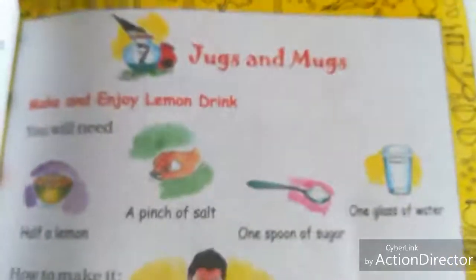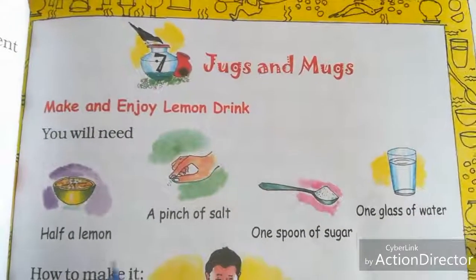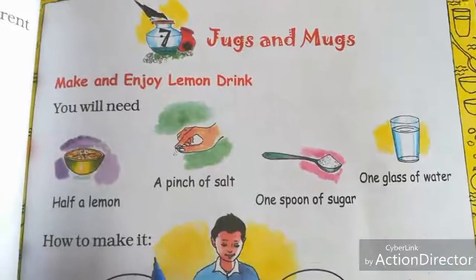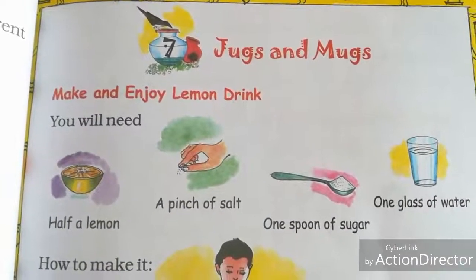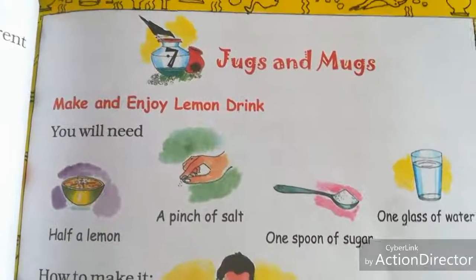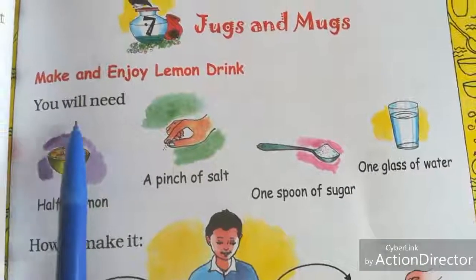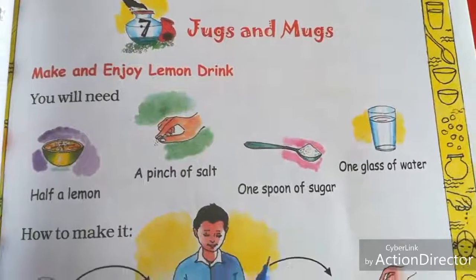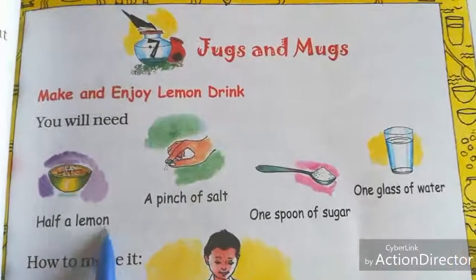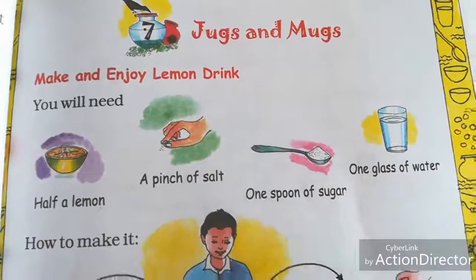The topic name is Jugs and Mugs. The activity is: Make and enjoy a lemon drink. Do you like lemon drink? Yes, everyone will like a lemon drink! For making a lemon drink, you will need: half a lemon, a pinch of salt, one spoon of sugar, and one glass of water.